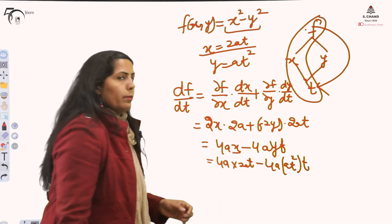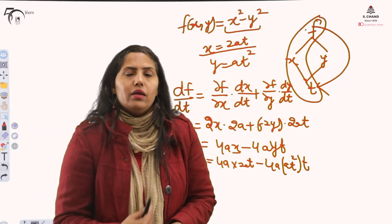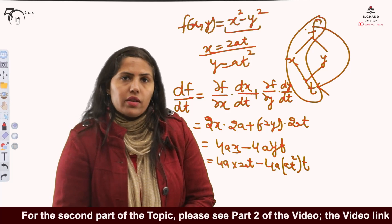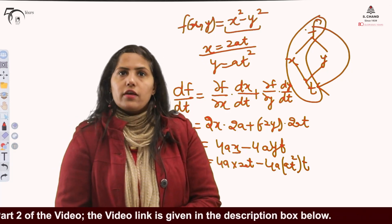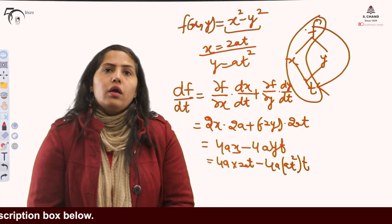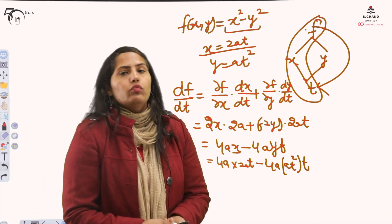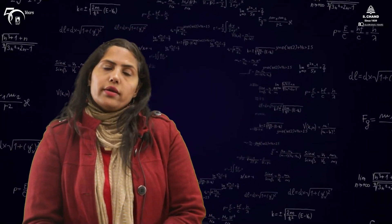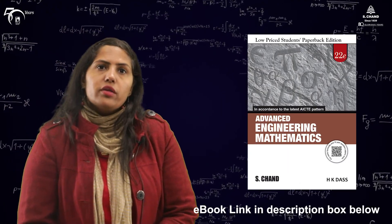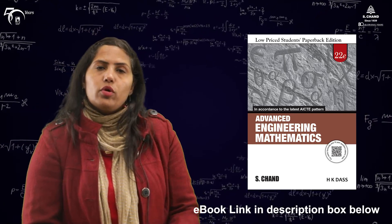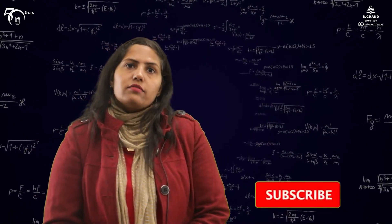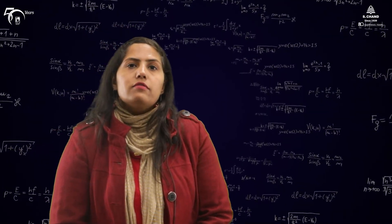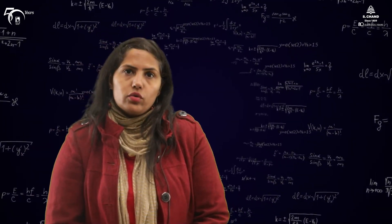This is the end of Part 1, in which we covered partial derivatives and total derivatives. In Part 2, we will discuss a very important theorem on partial derivatives — Euler's theorem for homogeneous functions. If you want to study Euler's theorem, partial derivatives, and total derivatives in detail, please refer to the book by S. Chan Publishing; the e-book link is in the description below. Don't forget to share, like, and subscribe to S. Chan Academy, and press the bell icon for future updates. Stay connected and keep watching — thank you.